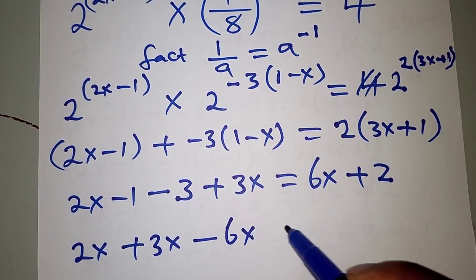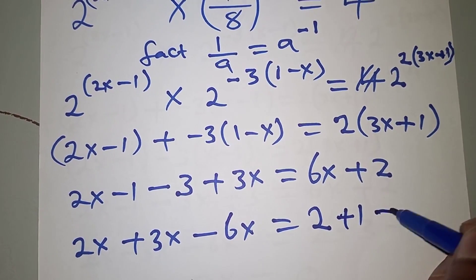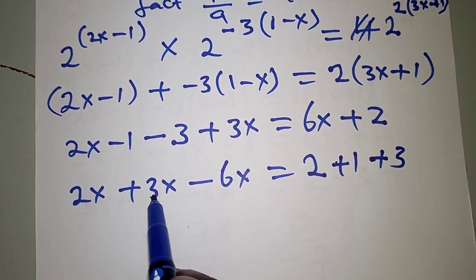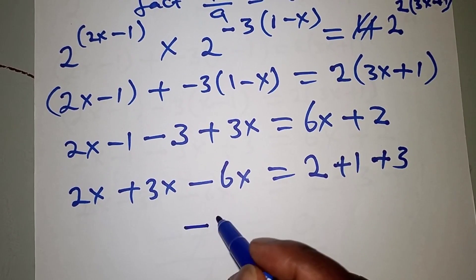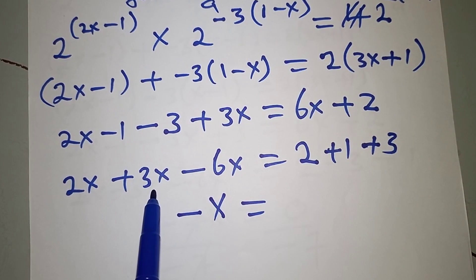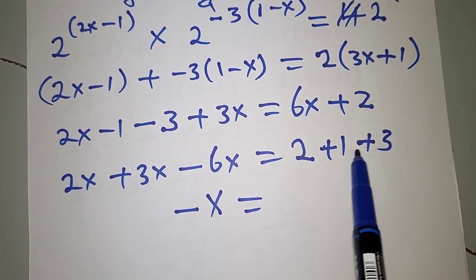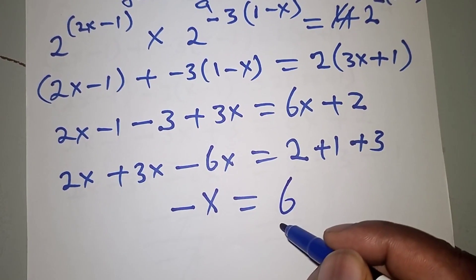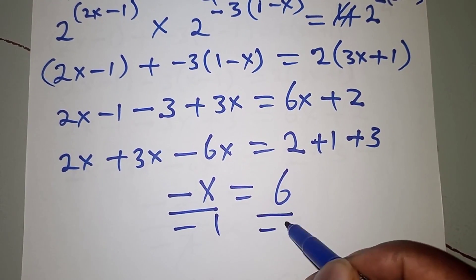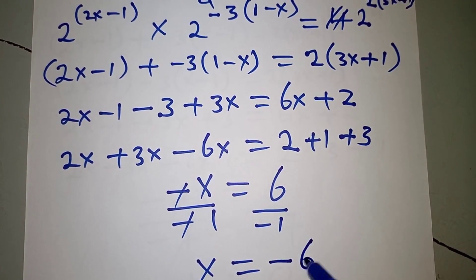We collect the like terms together. We have 2x plus 3x minus 6x equals 2, then plus 1 plus 3. So 2x plus 3x is 5x, and 5x minus 6x is negative x. Then 2 plus 1 plus 3 is 6, so negative x equals 6. Dividing both sides by negative 1, we find that x is equal to negative 6. That's how we solve that particular problem.